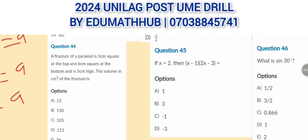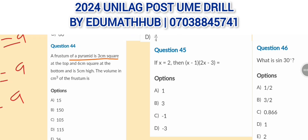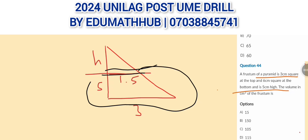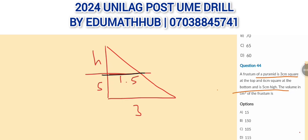For the next question, we have to find the volume of the frustum of a pyramid. The top is 3 cm across, the bottom is 6 cm across, and it is 5 cm high. Draw a diagram showing the frustum: the top half-width is 1.5, the bottom half-width is 3, and the frustum height is 5. The full pyramid height is h. The frustum volume equals the big pyramid minus the small pyramid.